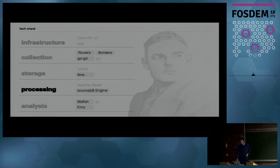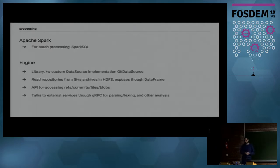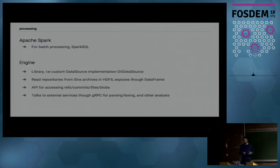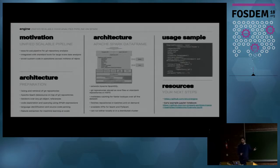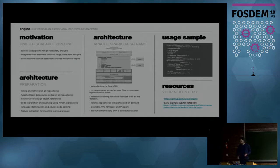After storing the data, you want to process it. Apache Spark is a good way to do batch processing on a cluster of machines, and Spark SQL is something people understand and know how to use. We built a custom library called Engine to expose those Git repositories at the Spark API level. It exposes references, commits, files, and so on — in Spark language, whether that's Python or Scala. It also talks through gRPC interfaces to more advanced stages of source code analysis. Here's an example: with a simple pipeline you can express extraction of references, take the head reference, get all the files, and for every file detect the language. Both engineers and machine learning people can use it via Python and Scala APIs.